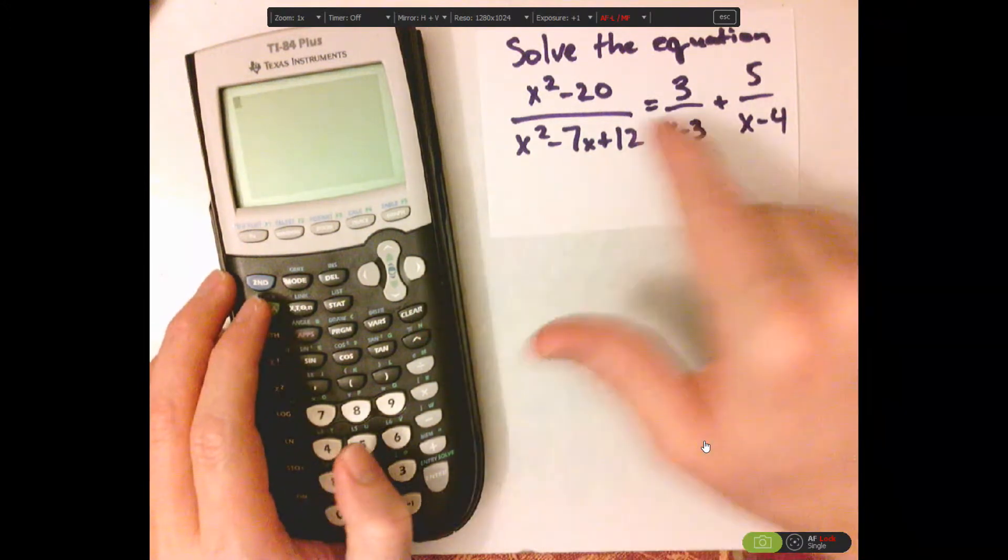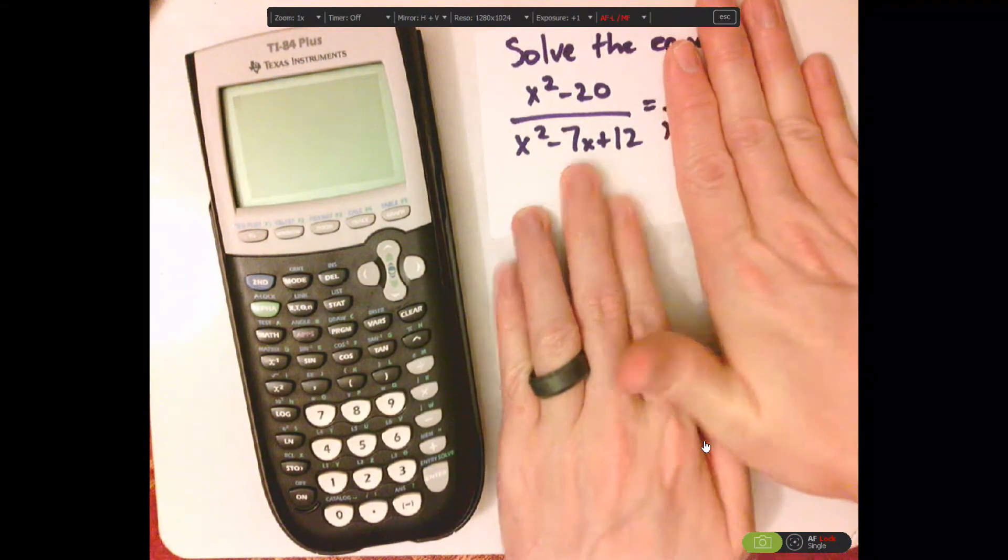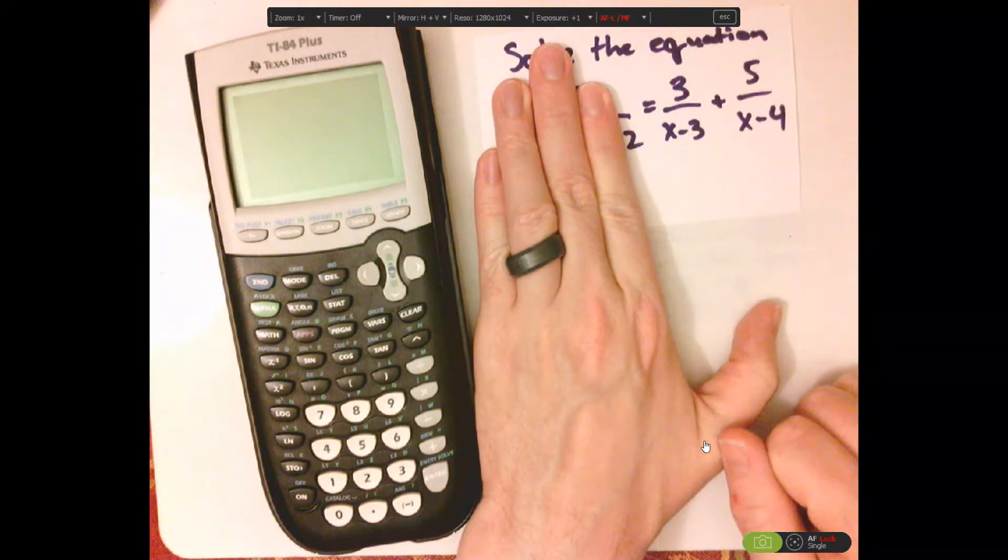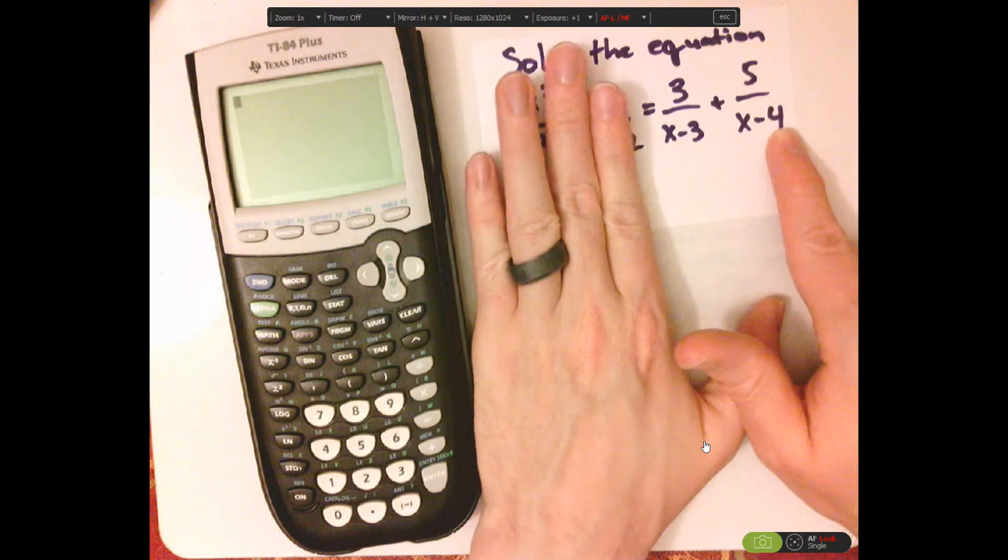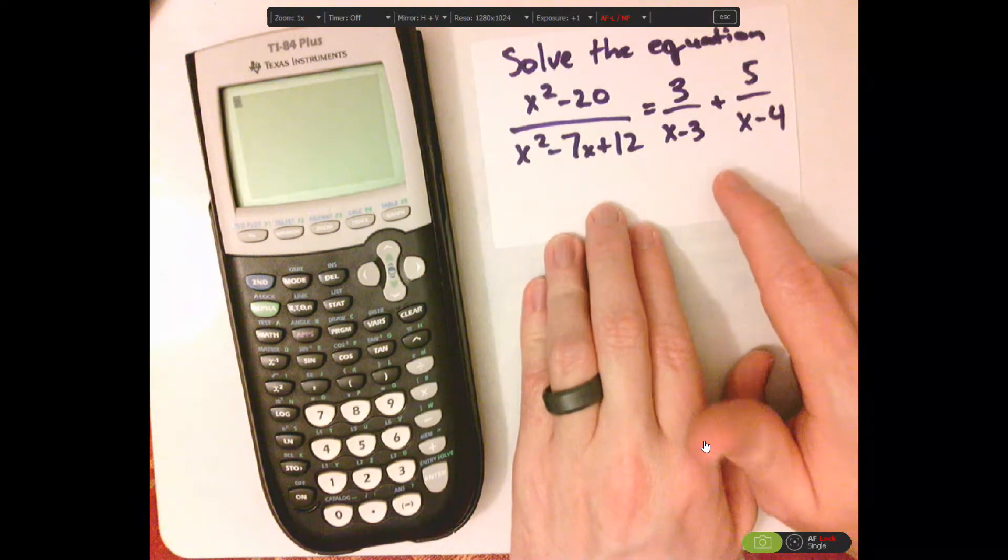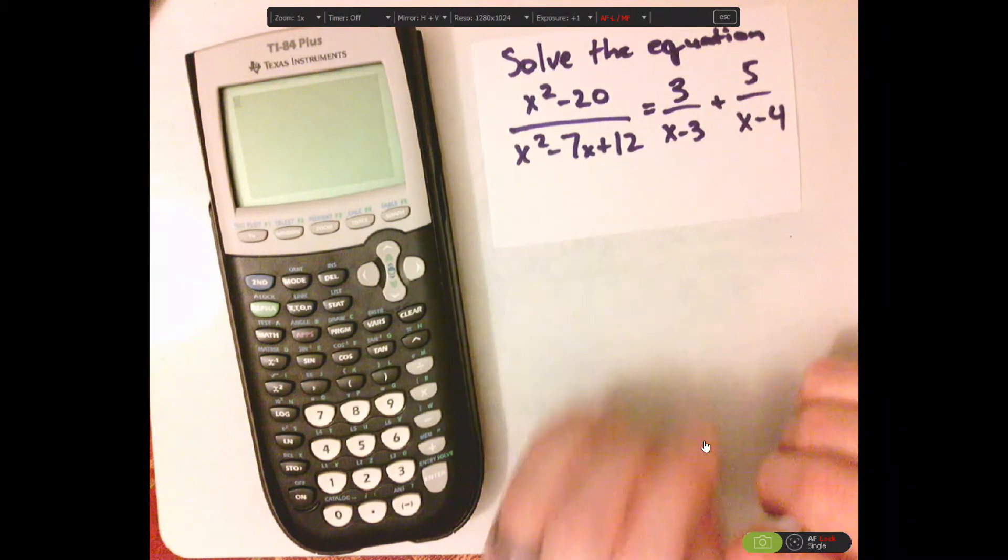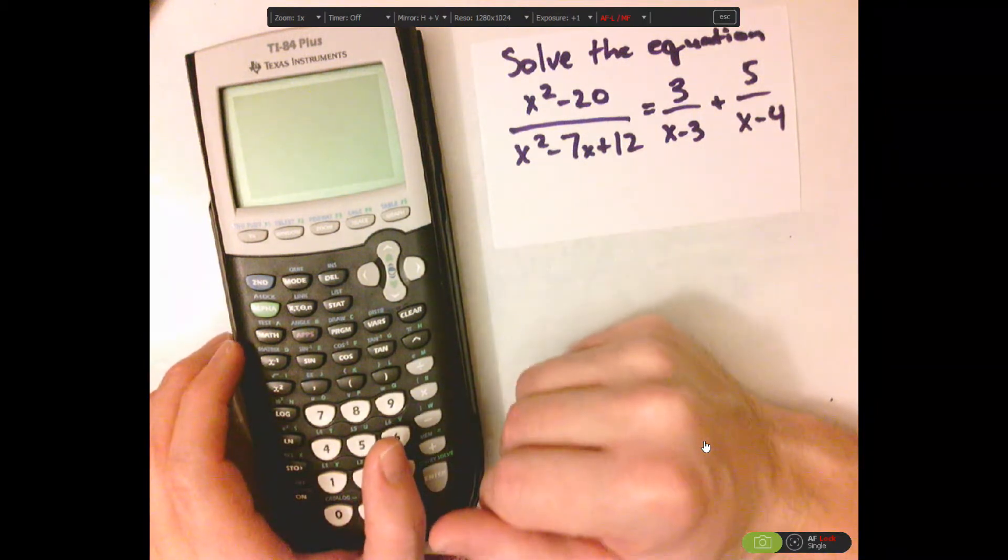Alright, so what we're going to do is basically take each side of the equation, and we're going to graph those and then take the intersection, and that will give us the solution or solutions to this equation.